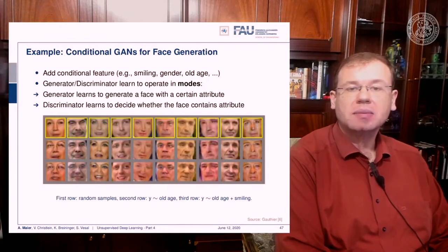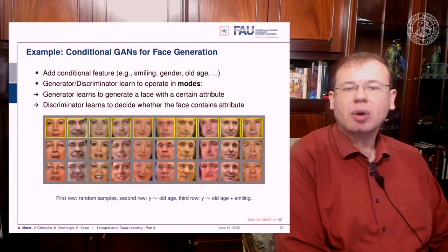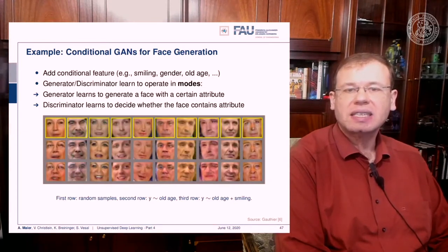You add a conditional feature like smiling, gender, age, or other properties of the image, and then the generator and discriminator learn to operate in those modes. This leads to the property that you're able to generate a face with a certain attribute. Here you see different examples of generated faces: the first row is random samples, the second row is conditioned on the property old age, and the third row is given the condition old age plus smiling. You can see the conditioning vector is still able to produce similar images, but you can actually add those conditions on top.